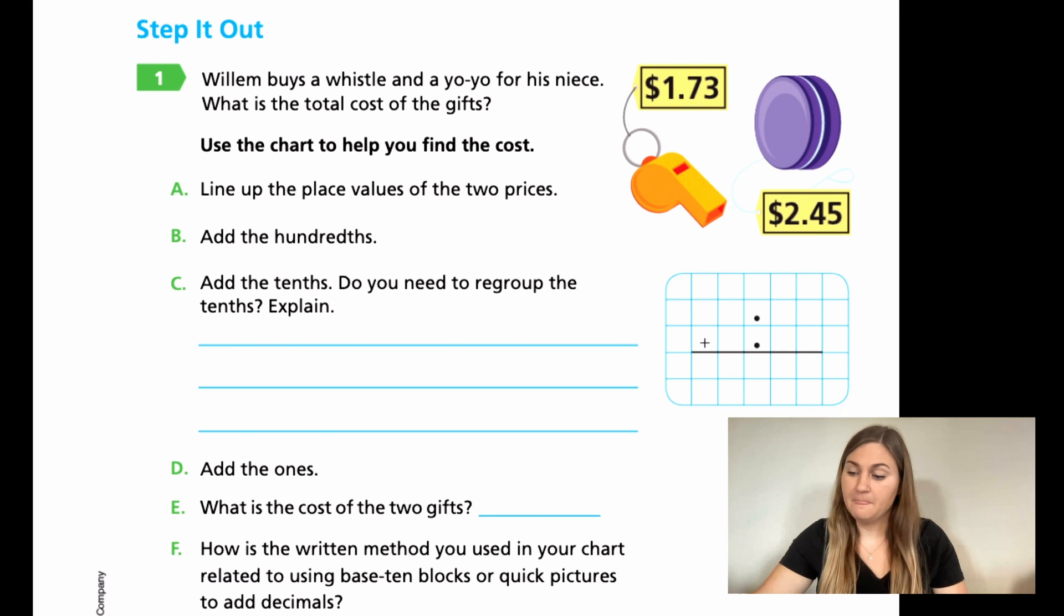We have a step it out. It says William buys a whistle and a yo-yo for his niece. What is the total cost of his gifts? Use the chart to help you find the costs. For A, it says line up the place values of the two prices. In this little grid over here, it sets us up with an addition problem with the decimals already there. Notice that the decimal takes up an entire row of the grid. They just really want to make sure that you don't end up mixing up the numbers and that each part of the number has its own column.